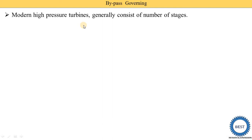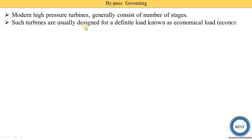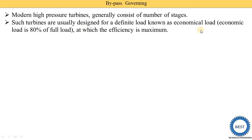In the later stages, more mass of steam is required, and this additional steam is supplied using bypass lines. Such turbines are usually designed for a definite load called the economic load. The economic load is 80 percent of the full load — for example, if the turbine capacity is 10 kilowatts, then 8 kilowatts is the economic load. At the economic load, the turbine has maximum efficiency.